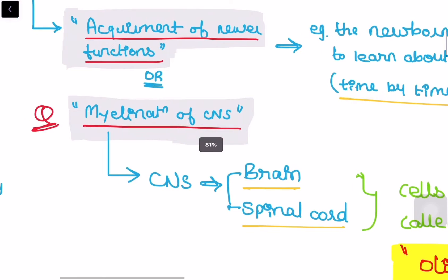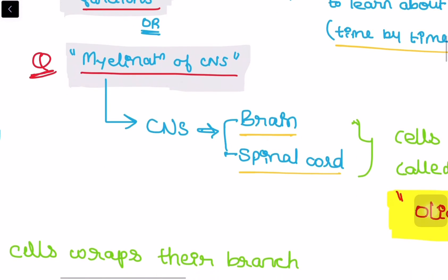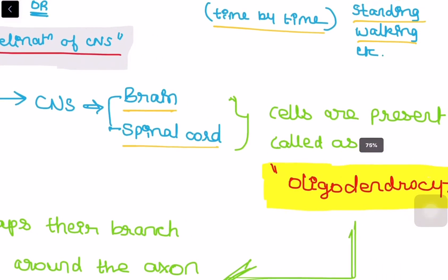And as per the second definition, myelination of central nervous system. Myelination of central nervous system, it is the central nervous system includes brain and spinal cord.